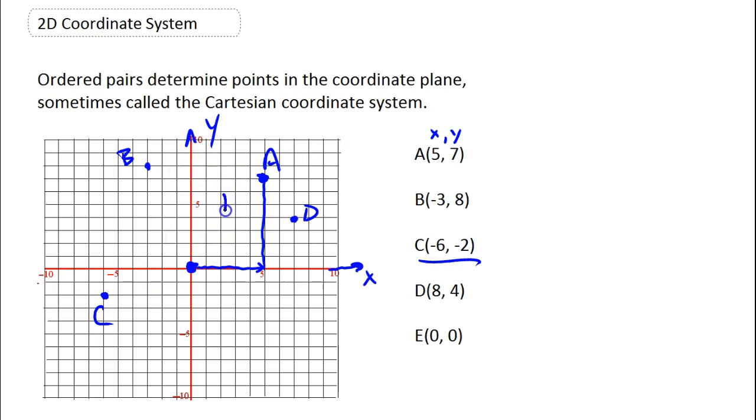The coordinate plane is divided into 4 quadrants, so this is the first quadrant, where both x and y are positive. This is the second quadrant, negative x, positive y. Third quadrant, this is negative x, negative y. And fourth quadrant, positive x, negative y.